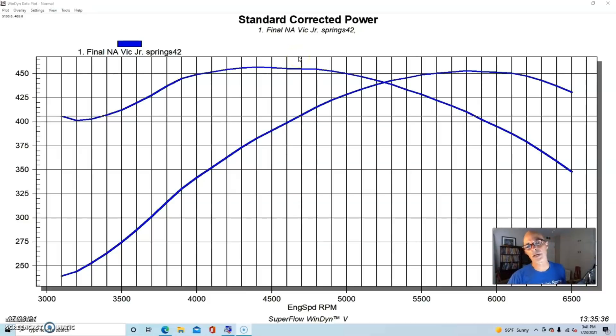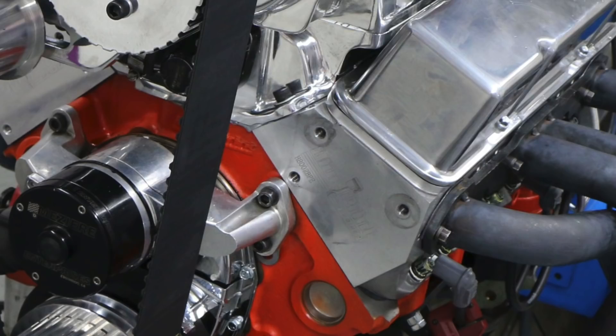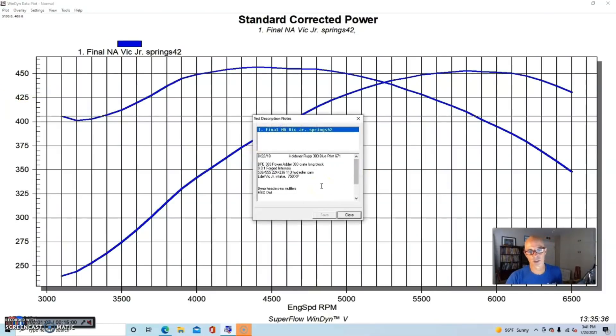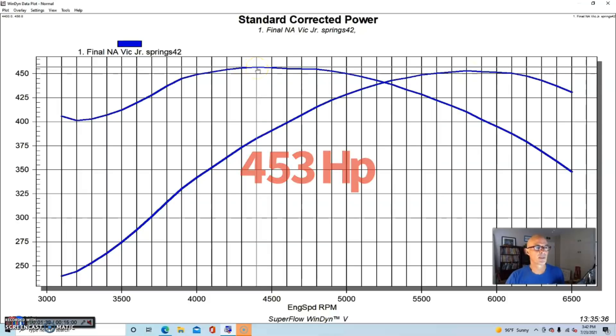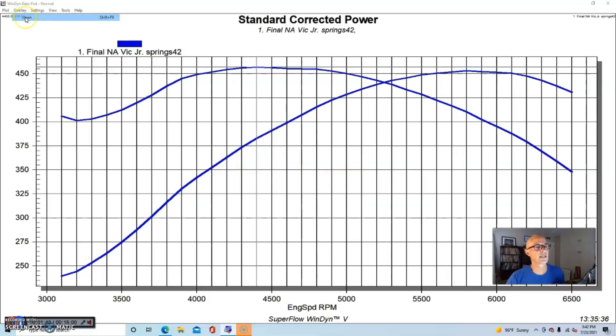We got some pretty big power gains on the supercharged application. This was a 383 small block Chevy, a Power Adder 383 from the guys over at Blueprint Engines. It had their as-cast heads on it. For this test it had a healthy cam in it—536/555 lift, 224/236 degree duration at 113 degree lobe separation angle. We ran this thing NA as I like to do before we ran any of the boost. We ran with an Edelbrock Victor Jr intake, 750 Holley carburetor, had an MSD distributor. This particular motor was the Blueprint Power Adder motor so it was low compression, it was 9 to 1. Run in naturally aspirated trim, our small block Chevy produced 453 horsepower and 457 foot-pounds of torque.